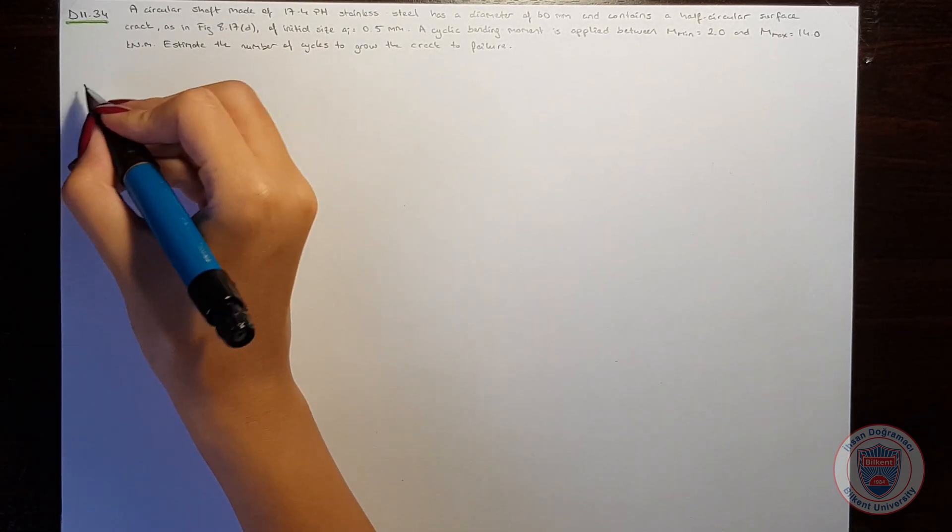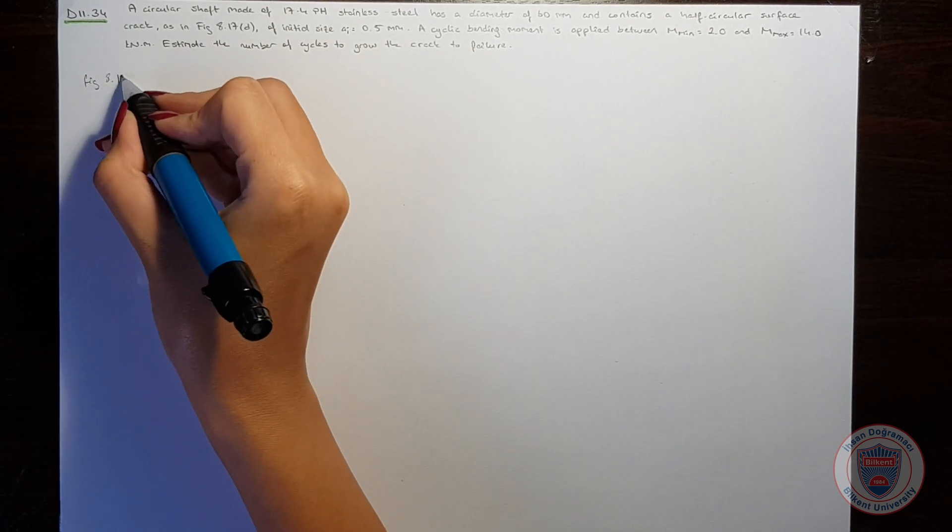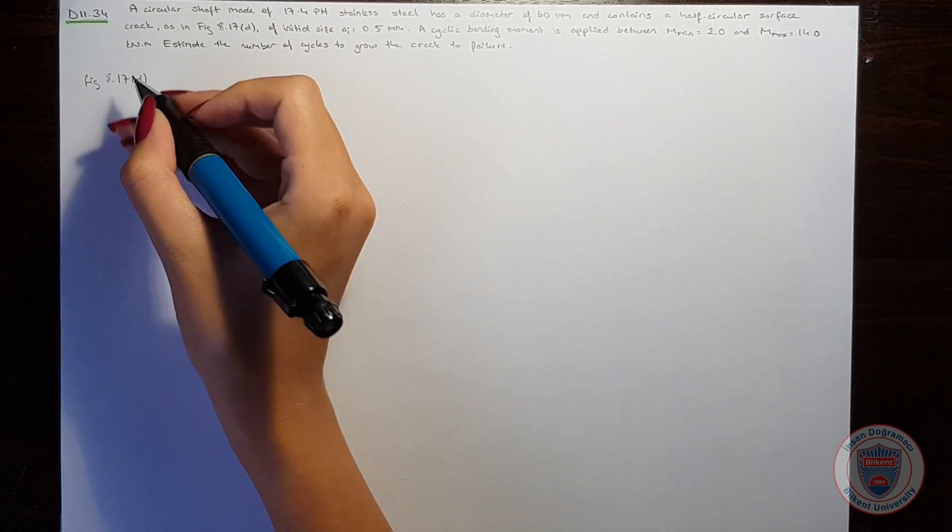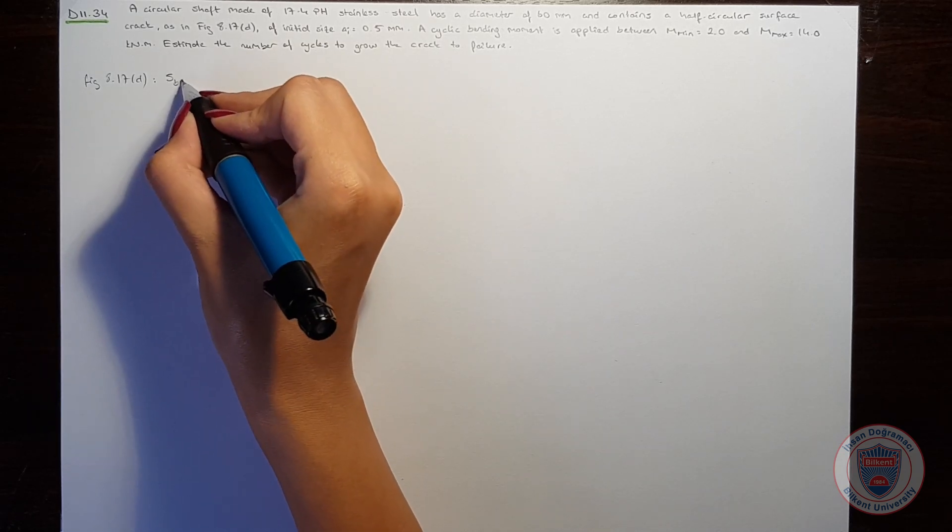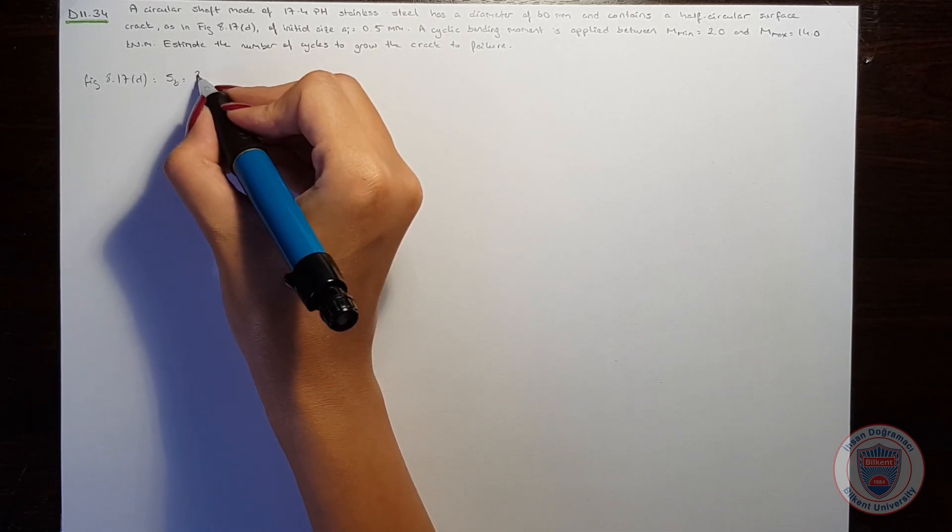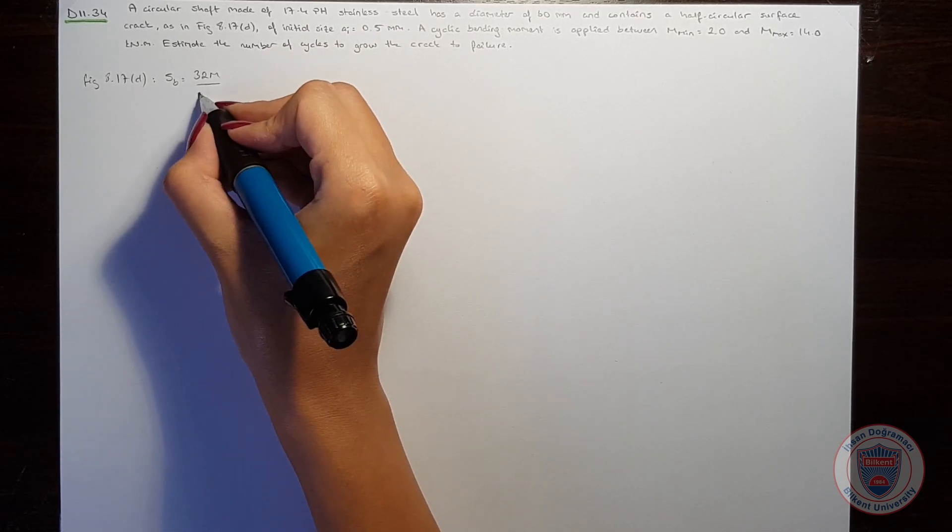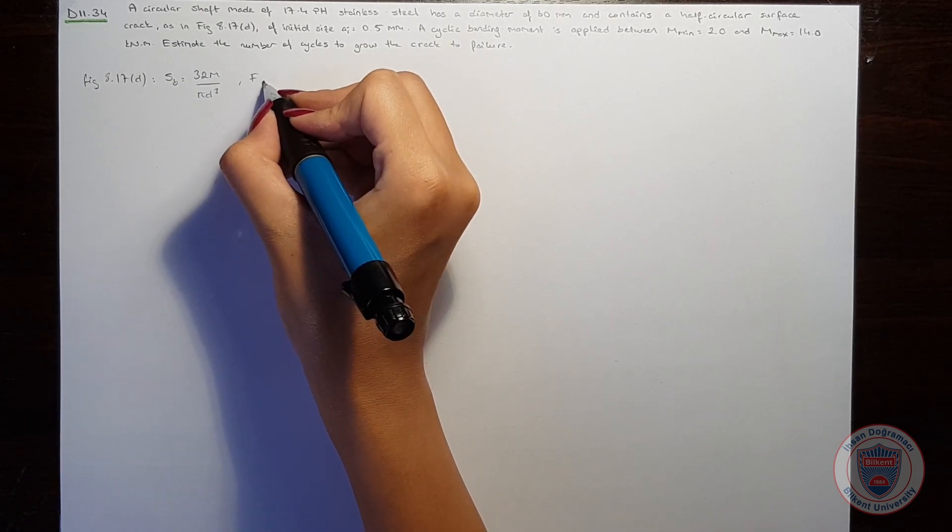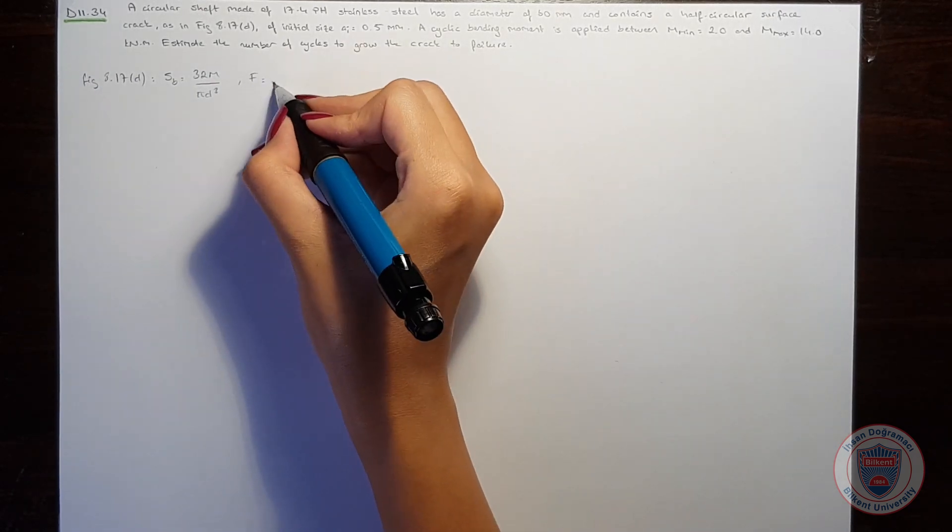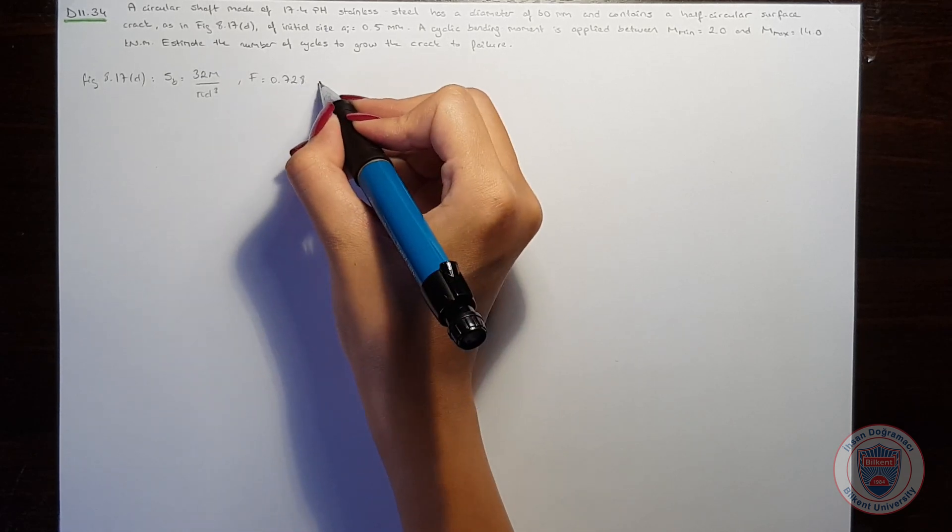Let's first write what we know. From figure 8.17 part D, we know that SB will be equal to 32m over πD³ and for small a over b, f will be equal to 0.728.